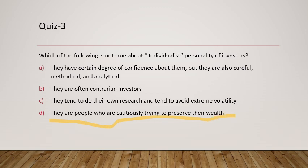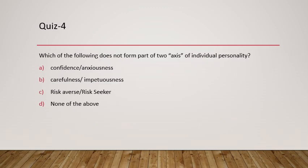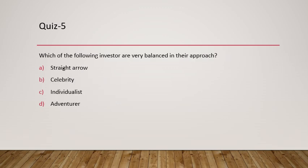Moving to question four: which of the following does not form part of the two axes of individual personality in the BB&K model? In this model, two axes are defined: confidence versus anxiousness is one axis, and carefulness versus impetuousness is the second axis. However, risk averse versus risk seeker is not part of the axes. So the answer would be C.